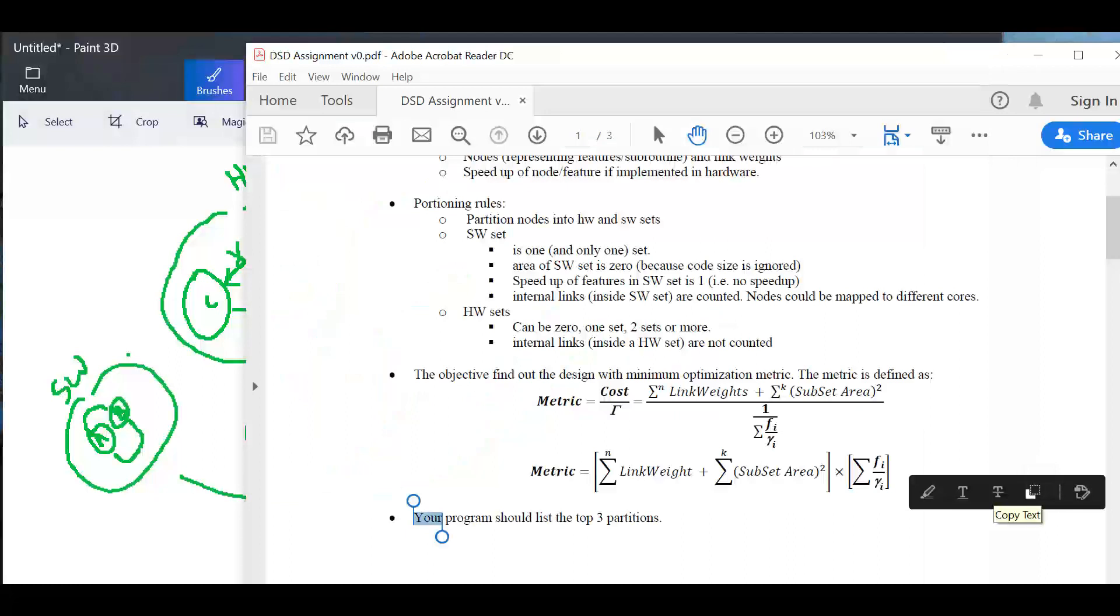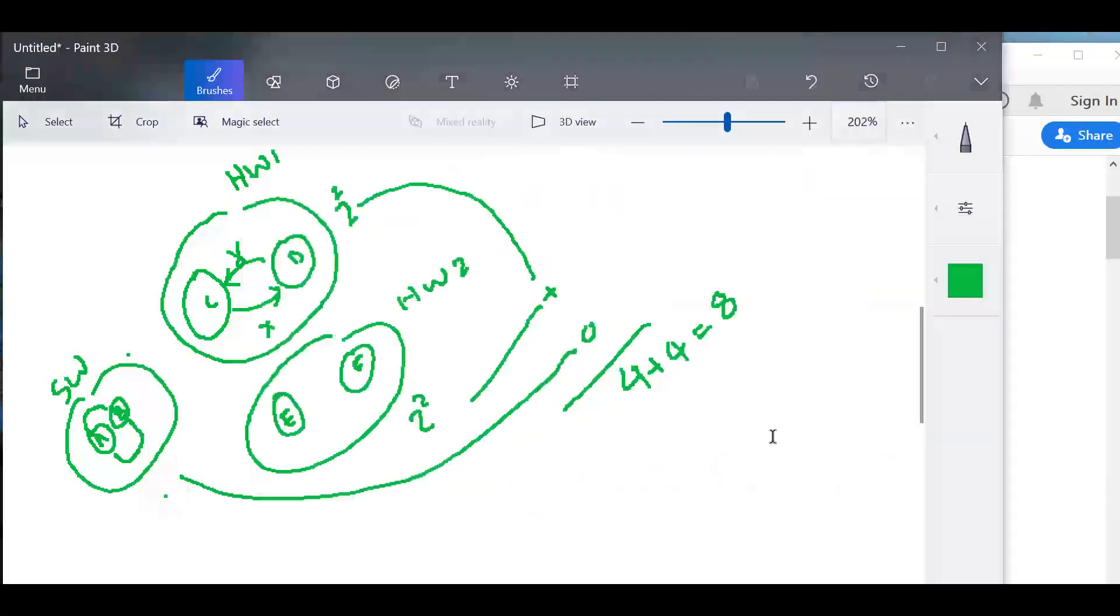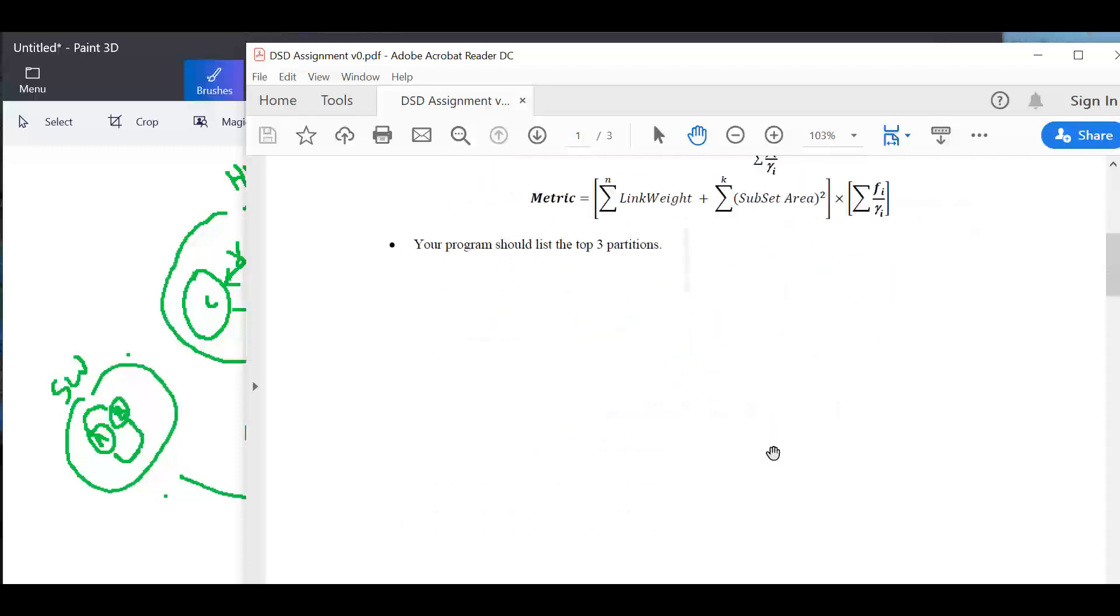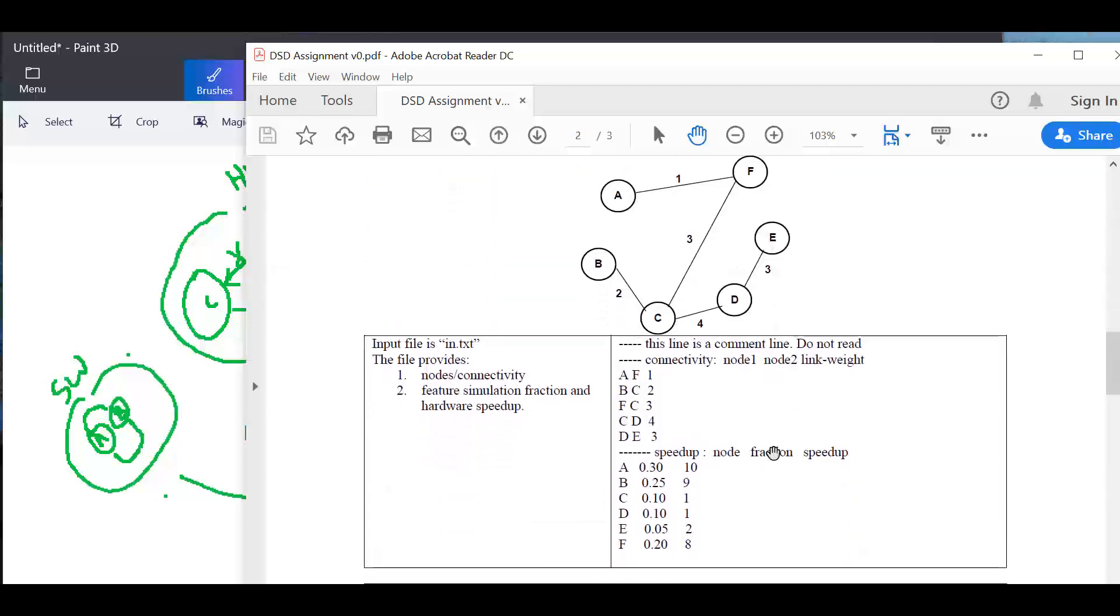The speedup consists of every feature. If it is mapped to software, then there is no speedup, and if it is mapped to hardware, then there is the speedup. Every function has a fraction of time. Let's say, for example, it takes 20% of the simulation time, and when we move it to hardware it is sped up by eight. So this is the speedup of this feature, and as we've learned in the class, we add those with this speedup function. Now, the goal of this project is to find the partition with the minimum metric.